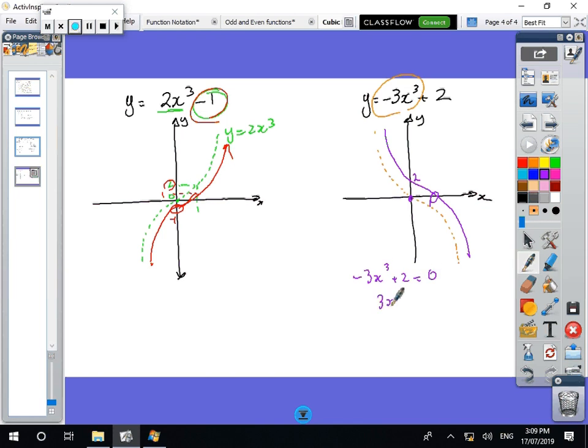So minus 3x cubed plus 2 equals 0, 3x cubed, make that a plus equals 2, x cubed equals 2 thirds, so x equals the cube root of 2 thirds, and that would be that answer there, that answer, for that number there.